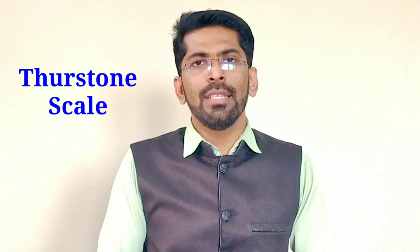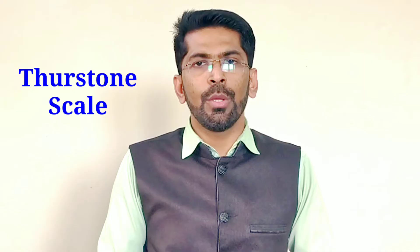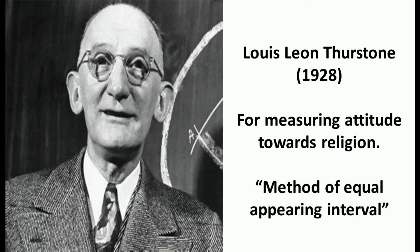It includes a number of agree or disagree statements. This has been developed using a consensus scale approach, which means unanimity in opinion. The selection of items is made by a panel of judges who evaluate the items in terms of whether they are relevant to the subject or not. It was developed by Louis Leon Thurston in 1928 as a means of measuring attitudes towards religion.